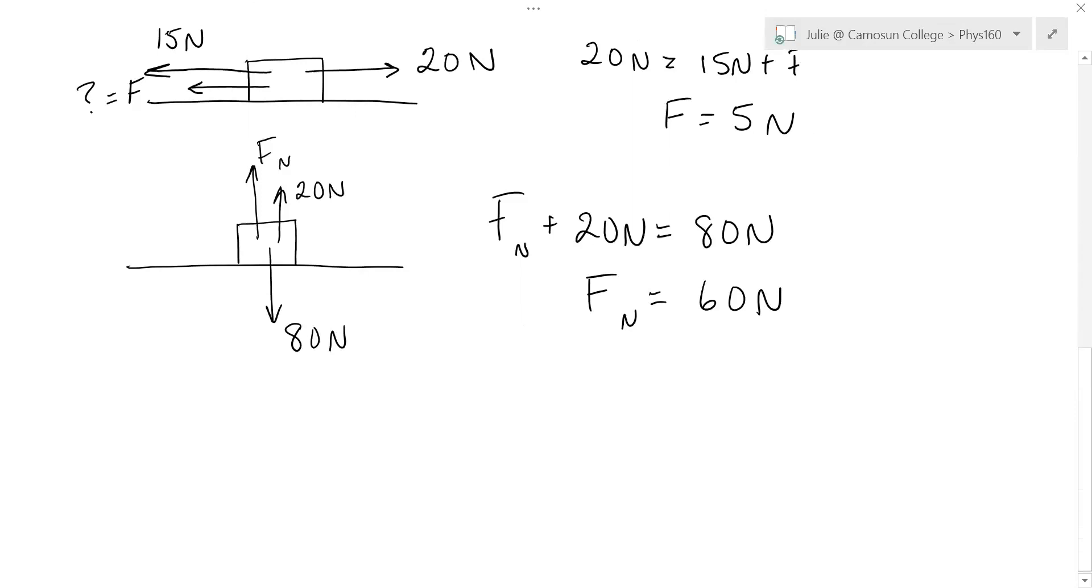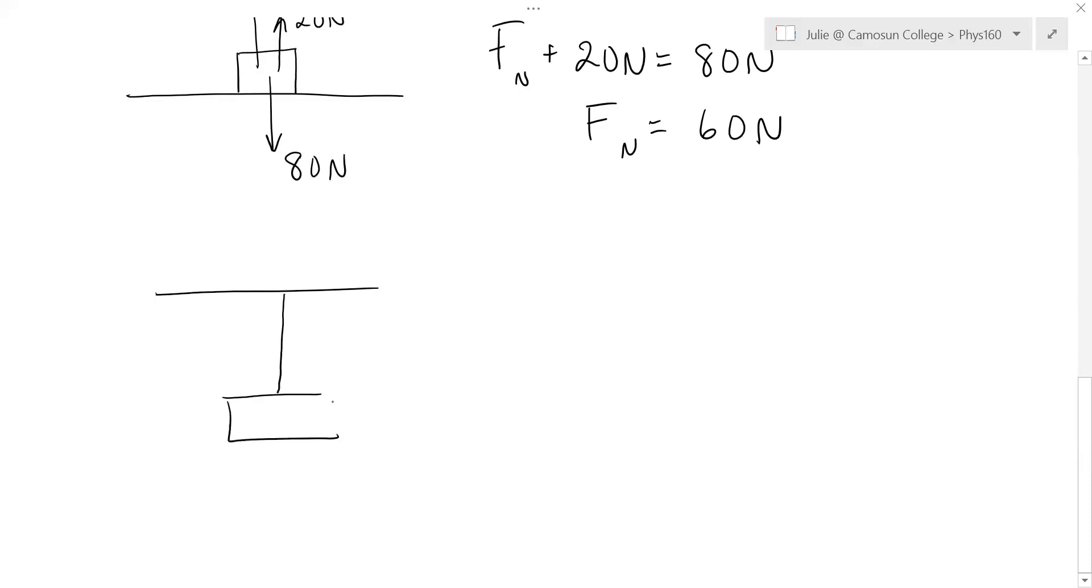What about if a box is hanging from a string on the ceiling? And the weight of this box, Fg, is 100 newtons. Now, what's the other force keeping that box in equilibrium? And what are we going to call that force? The force, this is a string, so we're going to call it force of tension in the string. Now, if up equals down and that box is just sitting there, then this Ft must exactly equal Fg. So it must equal 100 newtons.